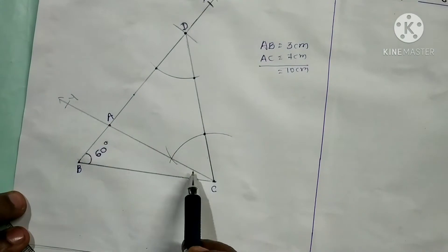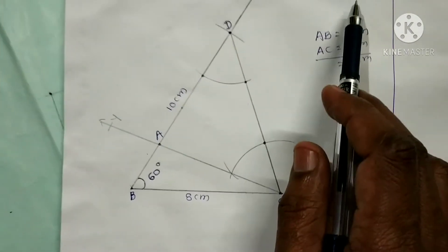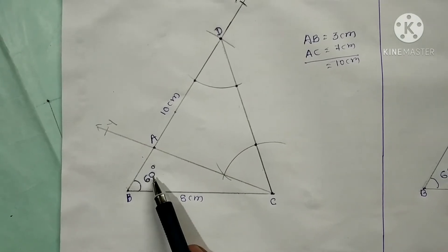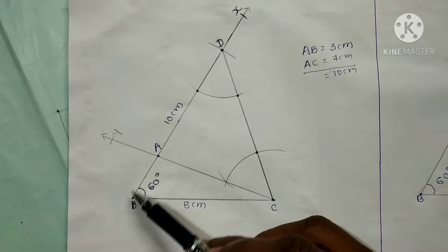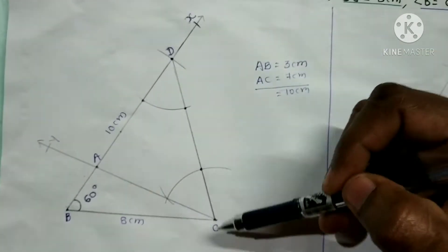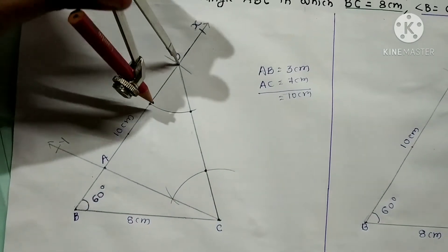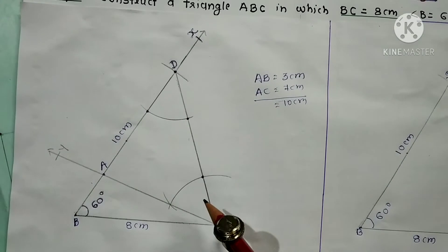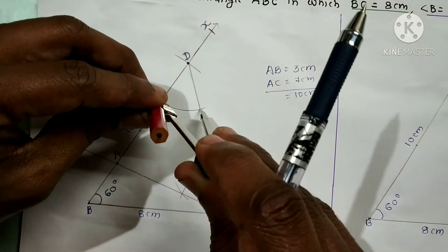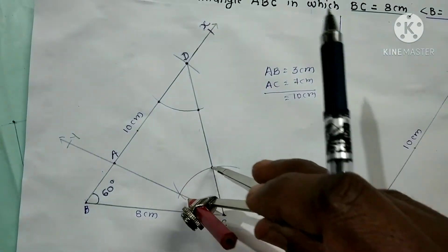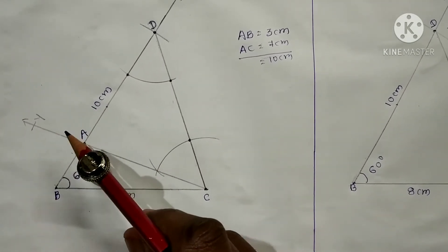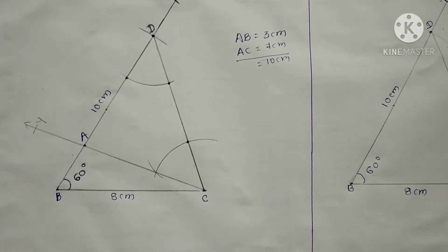So AB plus AC is 10 cm. This is the first type for such questions. First I drew line segment BC of 8 cm. Second step: I constructed the 60 degree angle. Third step: I cut the distance of 10 cm from point B to D. Then I joined points D and C. Then I drew one arc from D, and at point C with the same distance I drew one more arc, and then drew ray CY at point C. We got triangle A, B, C — this is the first type.